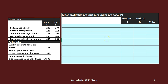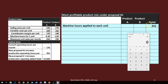Now we look at the proposal to increase hours from 176 to 352, which also increases fixed costs by $13,500. Would that be profitable, and how much of A and B should we produce? With 352 hours, we still allocate to A first. We can sell 650 of A, requiring 650 × 0.4 = 260 hours allocated to product A.